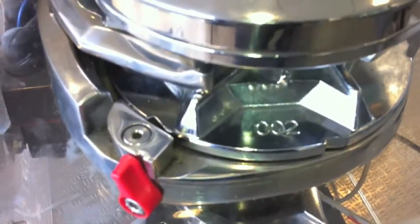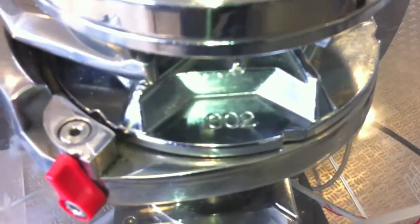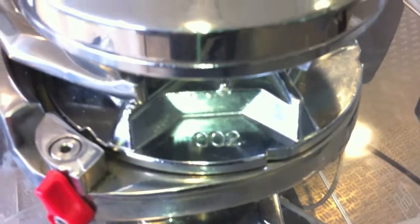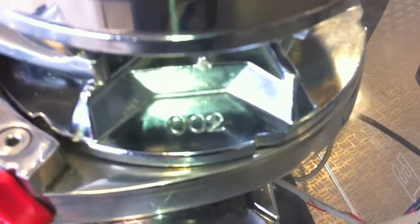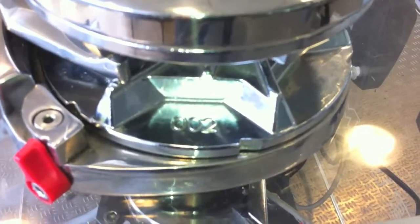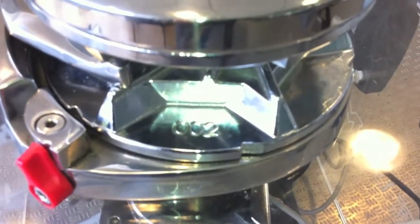Before we leave the gypsy, if we look inside the pockets, there is a serial number on every gypsy. This denotes the chain type. In this case, this is 002. By looking at the manual, I know this is for a 10mm DIN 766 chain.